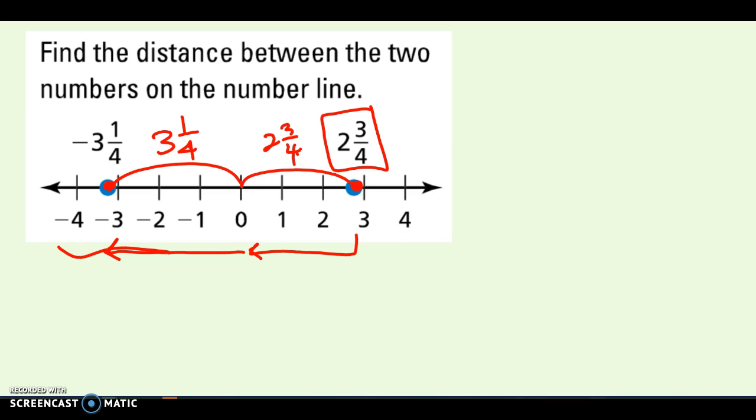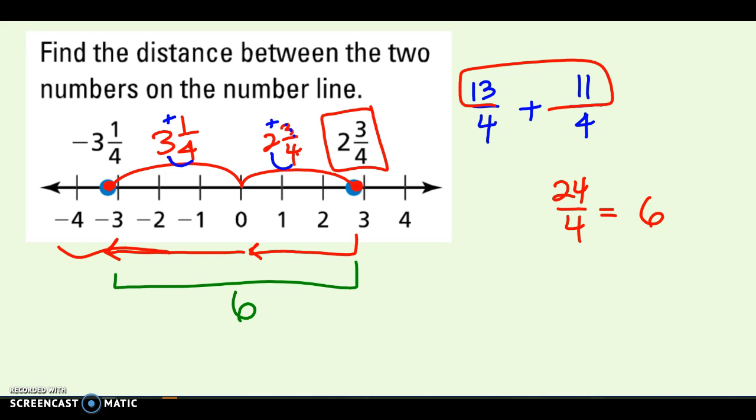Turn them into improper fractions first. This one would be 13 fourths. And this one would be 11 fourths. They already have common denominators. So 13 plus 11, when I add these numerators up, 13 plus 11 gives me 24 fourths, and that's equal to 6. So the entire distance from here to here was 6. That's my answer.